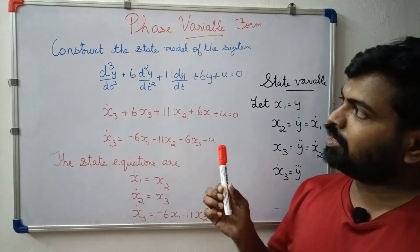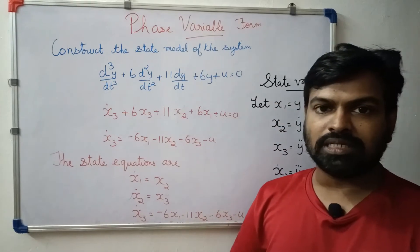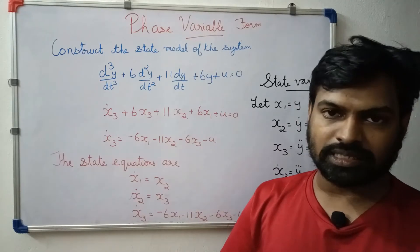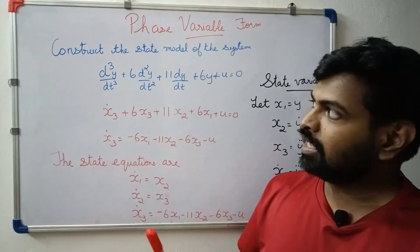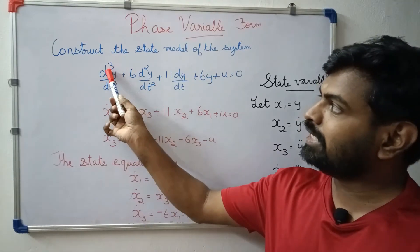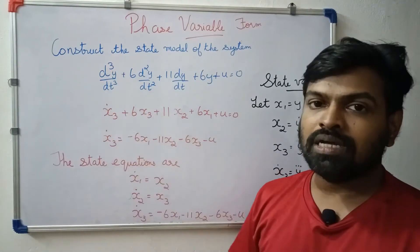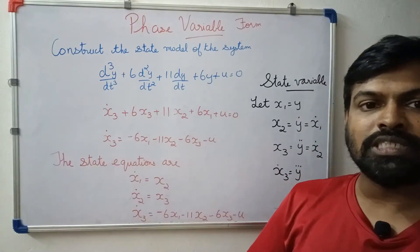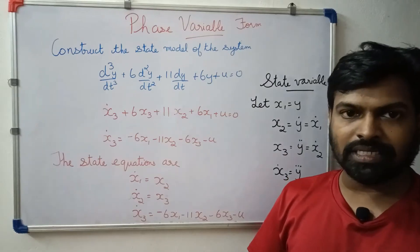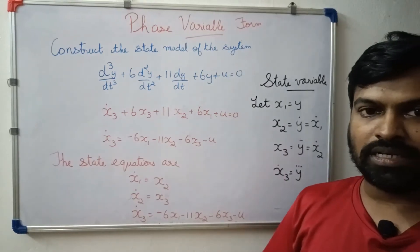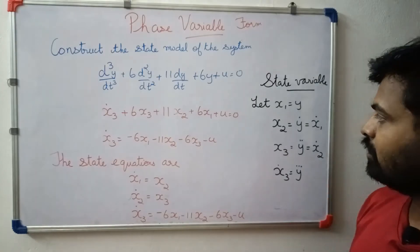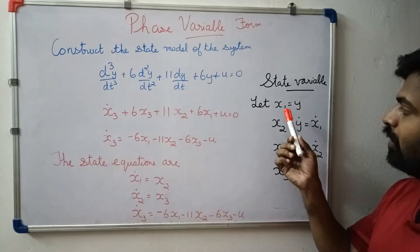What is the order of the differential equation? We have 3 state variables: x1, x2, and x3.